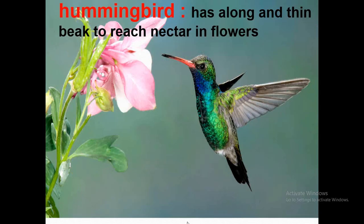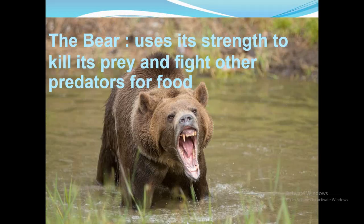Here is another example of adaptation: the hummingbird has a long and thin beak to reach nectar in flowers, which helps it get its food. Also, the bear uses its strength to kill its prey and fight other predators for food.